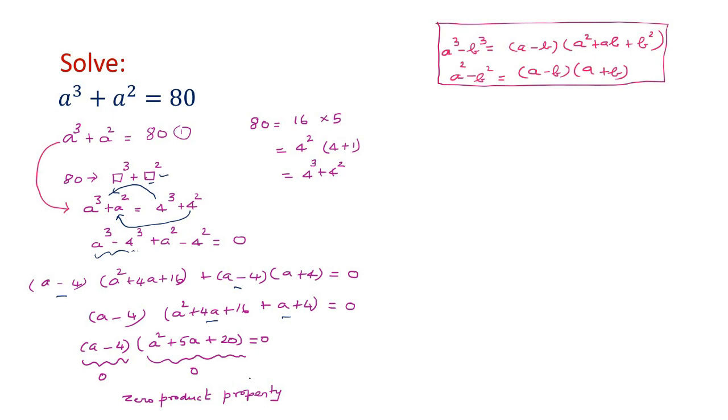So a - 4 = 0 or a² + 5a + 20 = 0. First you take a - 4 = 0, which gives you a = 4. So one solution we got. That of course you could have easily guessed from this. a³ + a² = 4³ + 4² means one solution is a = 4. But now we proceeded formally and got this.